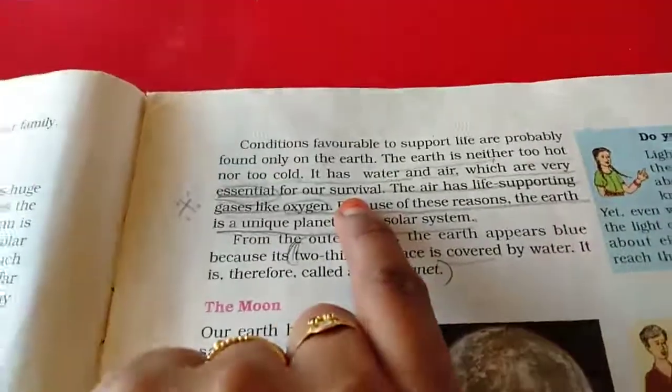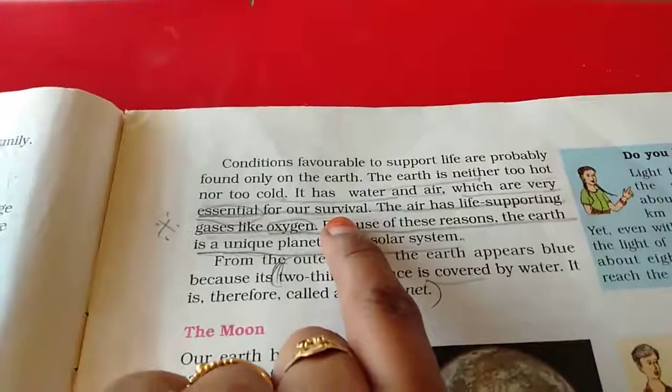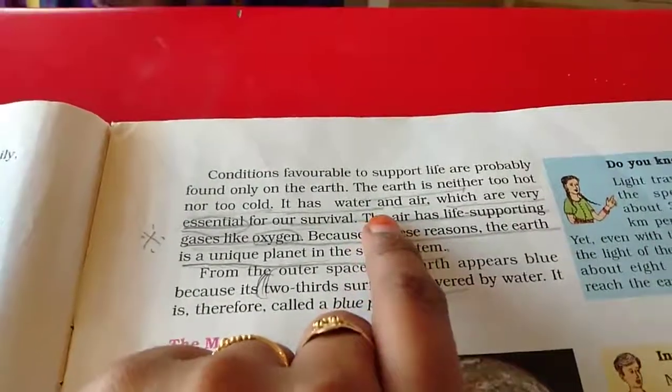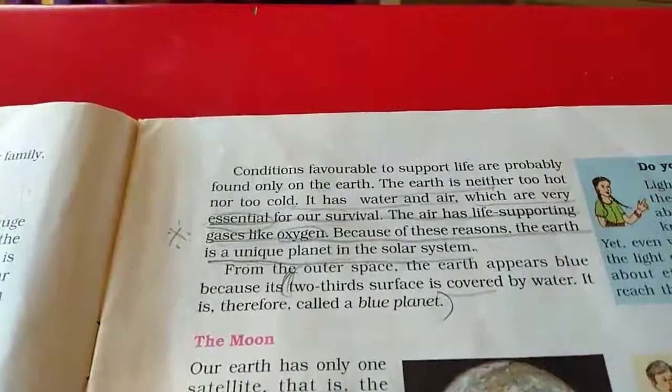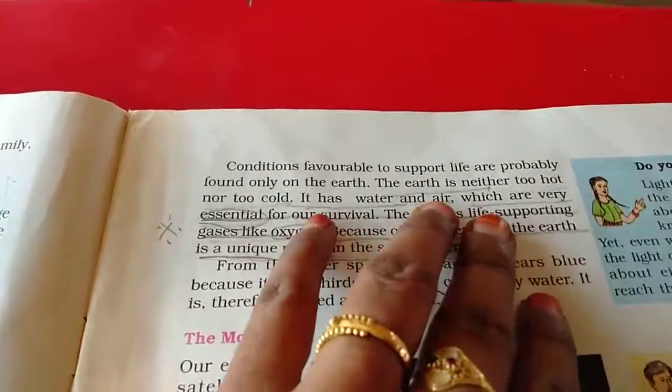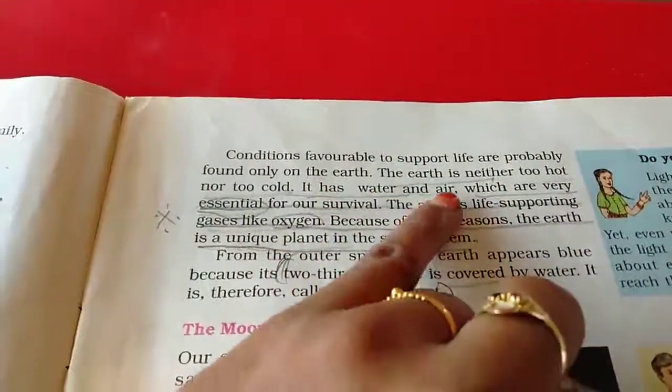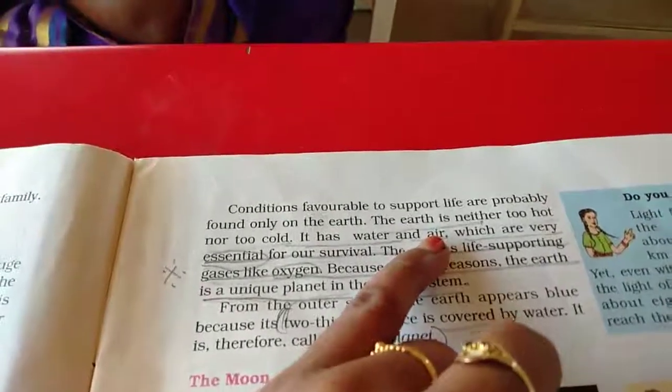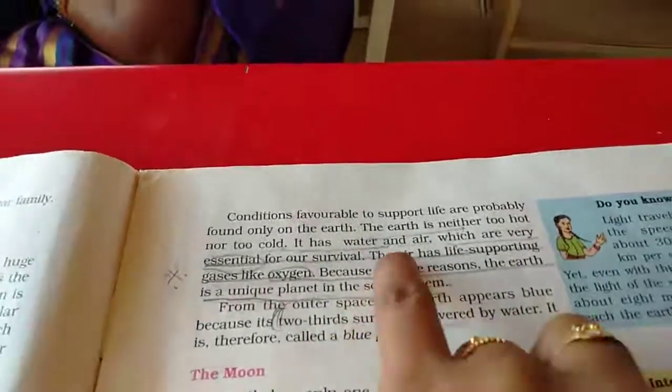It has water and air which are very essential for our survival. Survival means we don't have any facilities like our earth in other planets. We have only in the earth only. What is the facility? Water and air. We need oxygen.